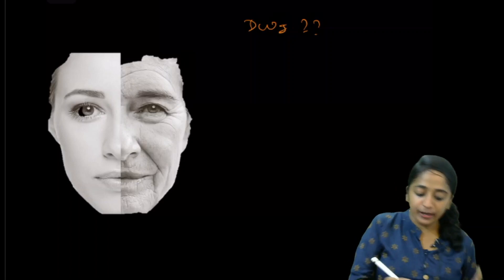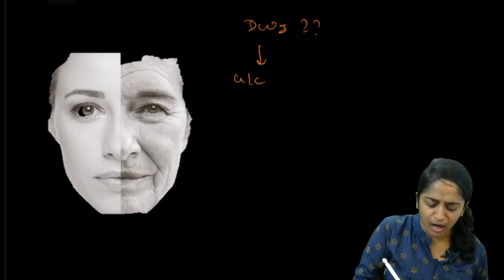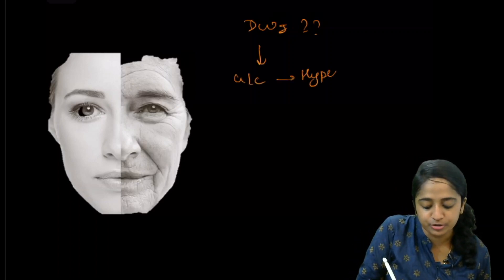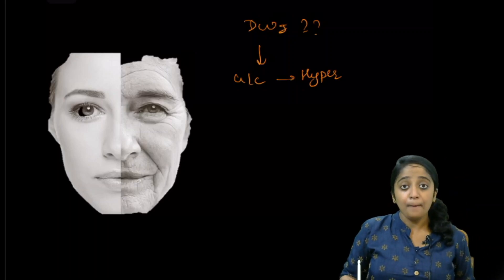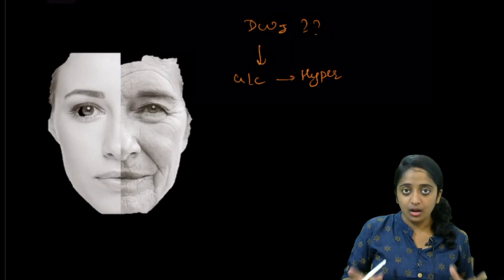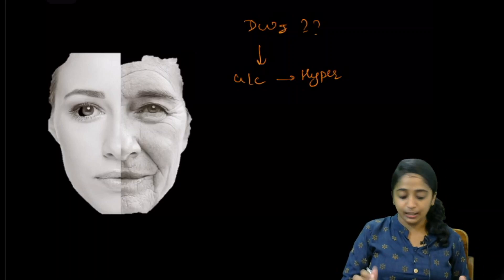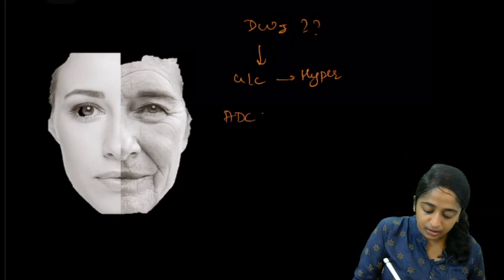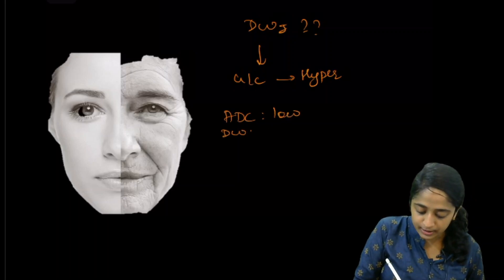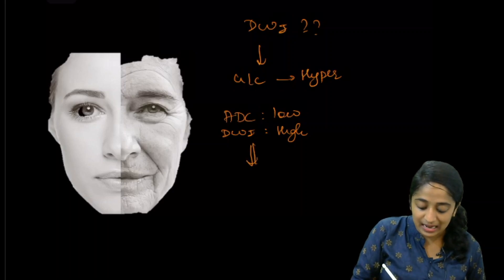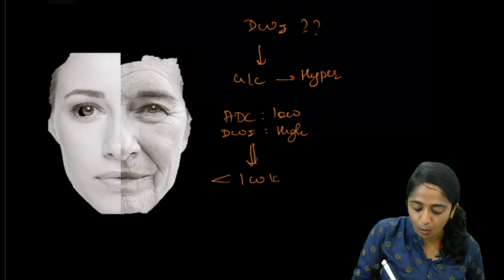Can you predict the age of infarct based on diffusion-weighted imaging? Yes. A good rule of thumb is that if there is low signal on the ADC map or high signal on the trace diffusion-weighted image, the infarct is less than one week old.